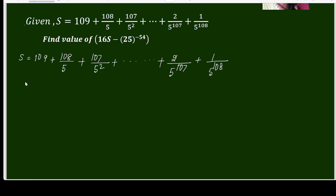I'll multiply throughout with 1 by 5. Then I'll get 1 by 5 times S equals 109 over 5. The second term will be 108 over 5 square, third term will be 107 over 5 cube, and so on. The last but one term will be 2 over 5 power 108 and the last term will be 1 over 5 power 109.